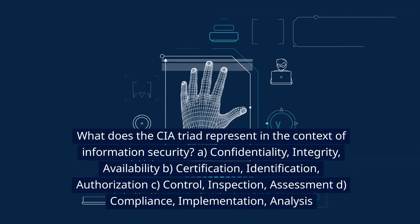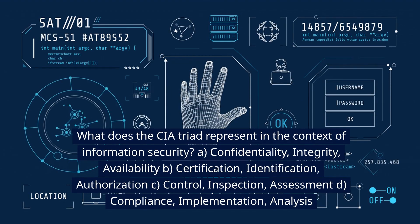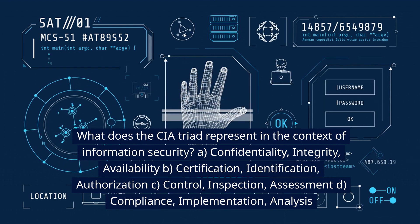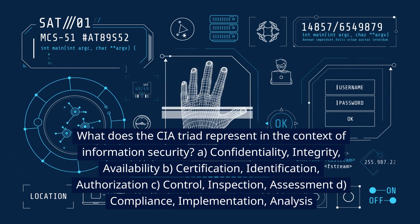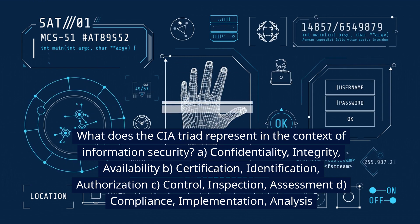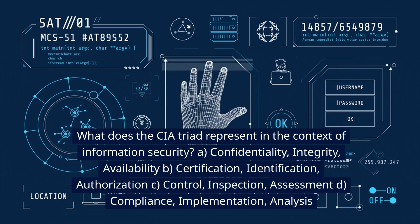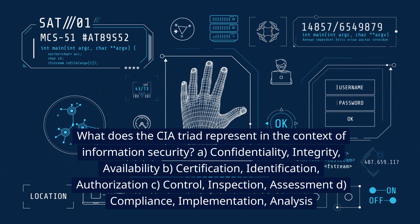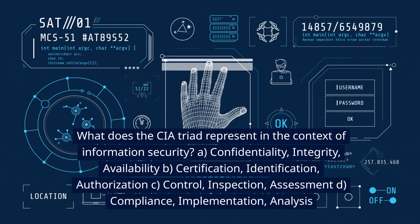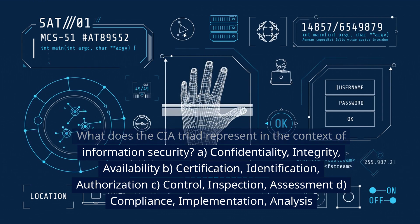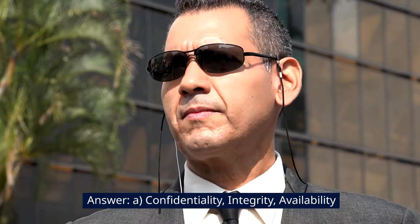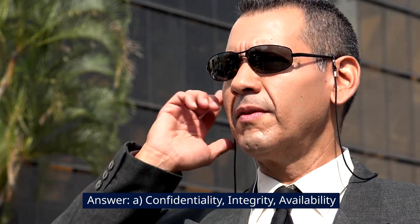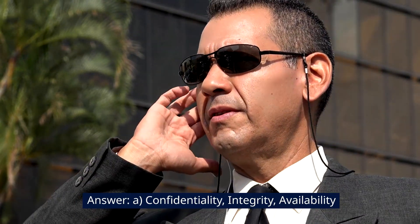What does the CIA triad represent in the context of information security? A. Confidentiality, integrity, availability. B. Certification, identification, authorization. C. Control, inspection, assessment. D. Compliance, implementation, analysis. Answer: A. Confidentiality, integrity, availability.